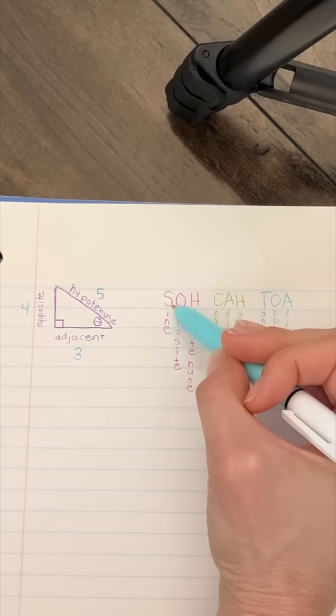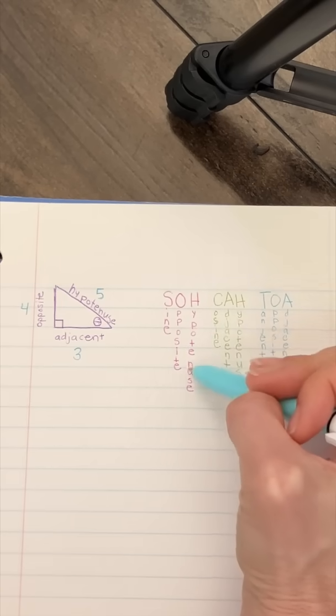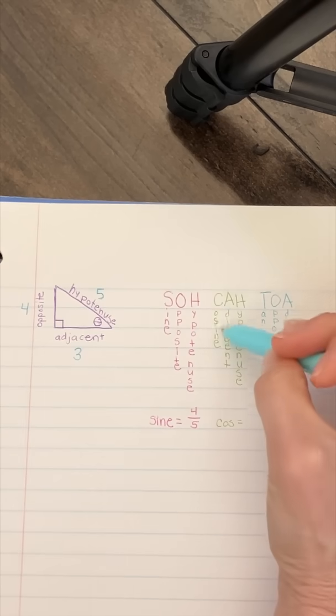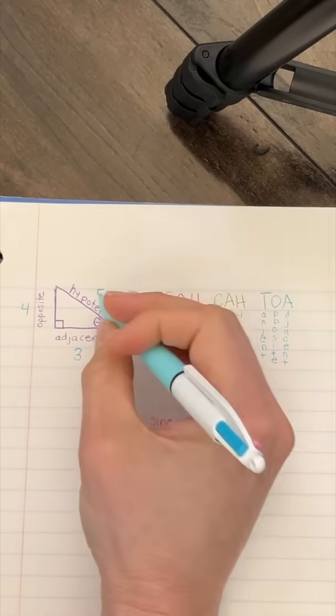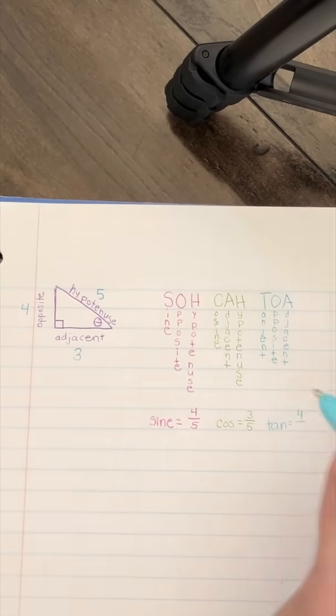SOH CAH TOA. SOH stands for sine, which is opposite over hypotenuse. Opposite, 4, over the hypotenuse, 5. CAH, cosine, adjacent over hypotenuse. Adjacent, 3, over hypotenuse, 5. Then we have TOA, which is opposite over adjacent. Opposite, 4, over adjacent, 3.